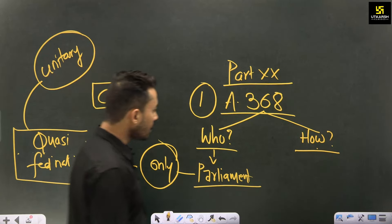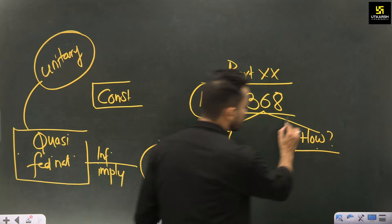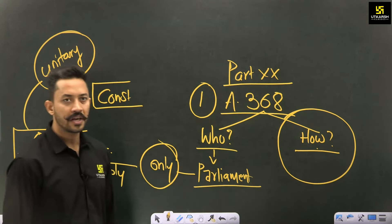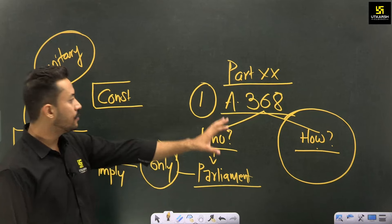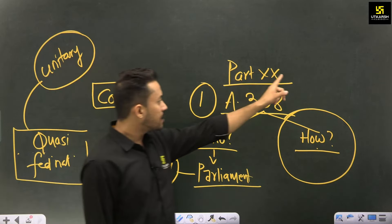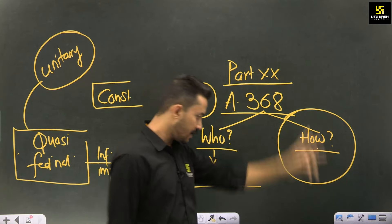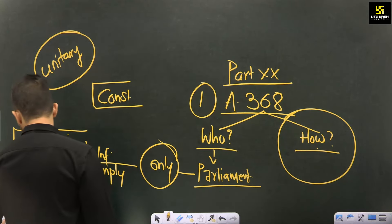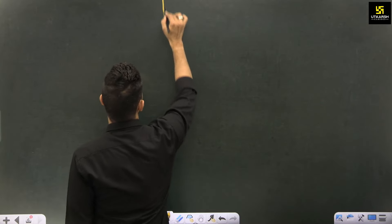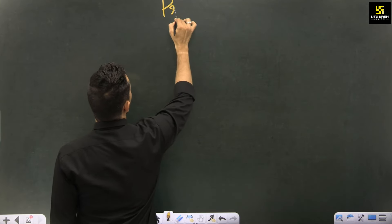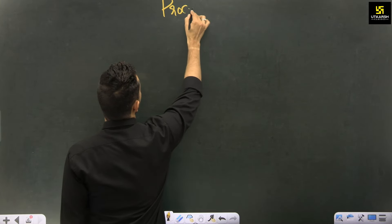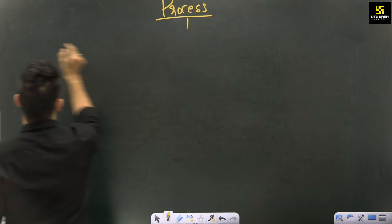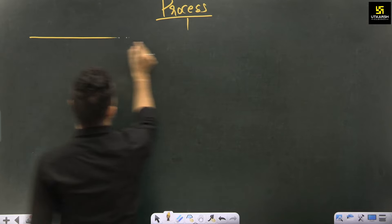So the fact is established — Part 20 contains Article 368. Now let us talk about what is the process for amendment of the Indian constitution.